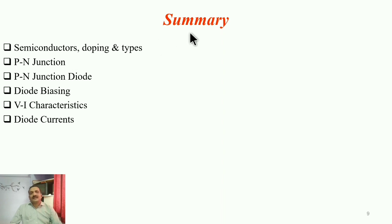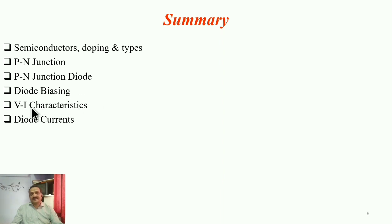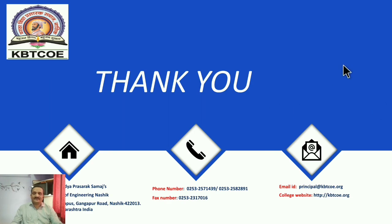To summarize, we have covered: what semiconductors are, the meaning of doping, types of semiconductors, what a PN junction is, the PN junction diode, how to bias the diode (forward and reverse biasing) using the VI characteristic, and diode currents. Thank you very much.